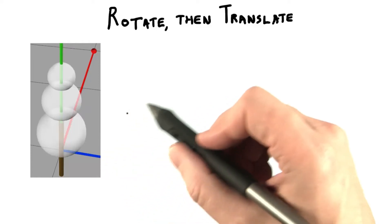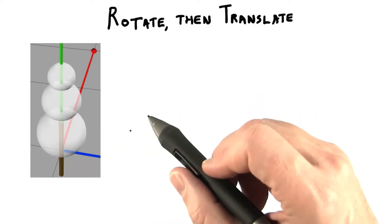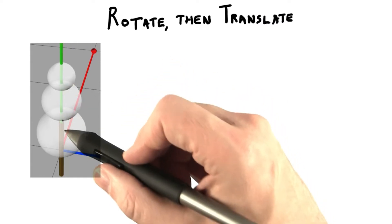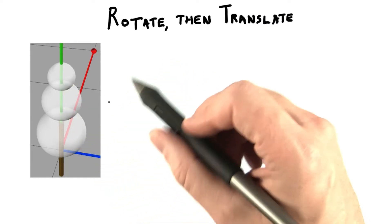We saw earlier how scaling and then rotating is often the most convenient order. With our snowman, the arms were positioned by rotating, then translating.